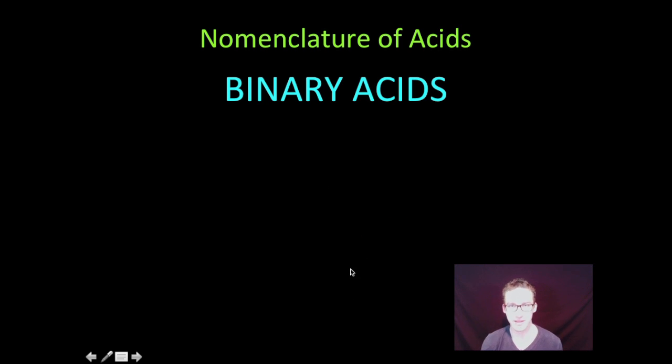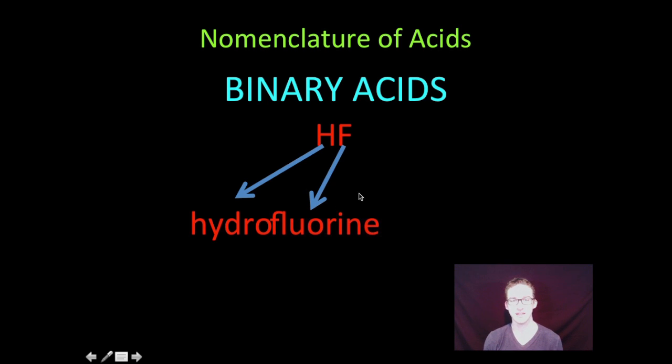Take a look at another example. HF, binary, two elements. Hydrogen, indicating that we've got this acid, and one other element. Prefix, hydro. Second element, fluorine. Fluorine. Going to use the root, which is just fluor. Fluor. The ending becomes ic. Hydrofluoric acid. Boom. Binary acid.